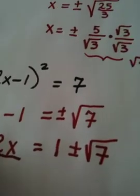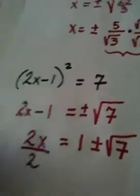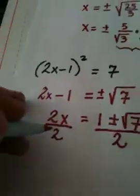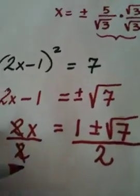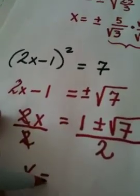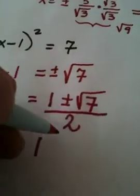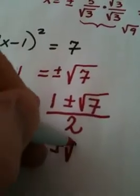And my final step is to divide by 2. Okay, and then here, everything is divided by 2. These 2's are gone. x equals, and my answer is 1 plus or minus the square root of 7 all over 2.